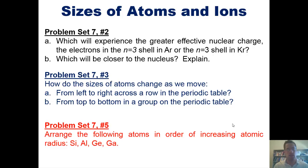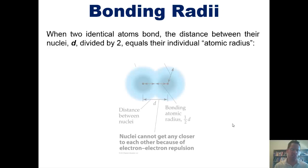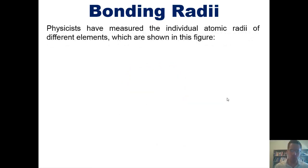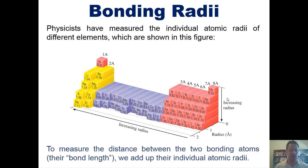That takes us to our next subject, that of bonding radii. When two identical atoms bond, as seen in this cute little picture, the distance between their individual nuclei, D, divided by 2, equals their individual atomic radius. Physicists have measured the individual atomic radii of different elements, which are shown in this figure, which I happen to have shown you before. Once again, the numbers shown here represent the radii from each nucleus of each of these individual elements to the outermost extent of their largest orbital. To measure, then, the distance between two bonding atoms, their bond length, we add up their individual atomic radii.